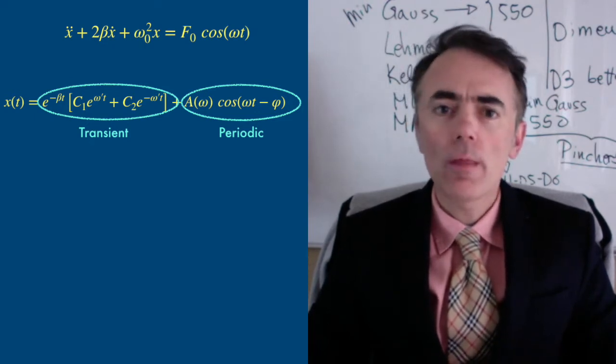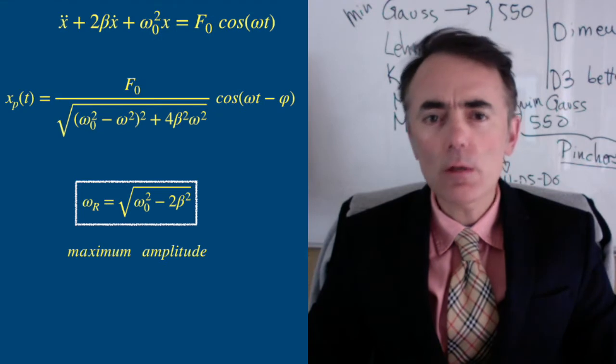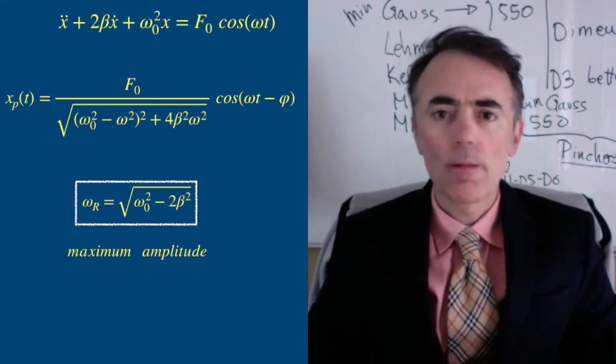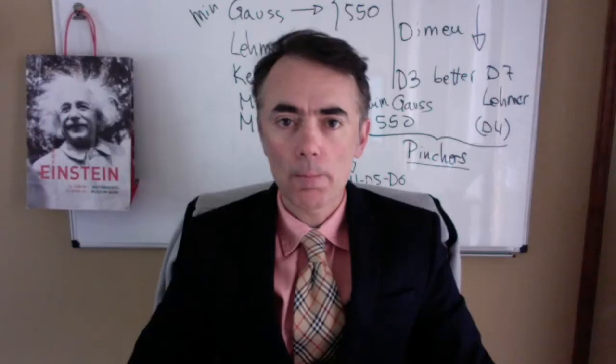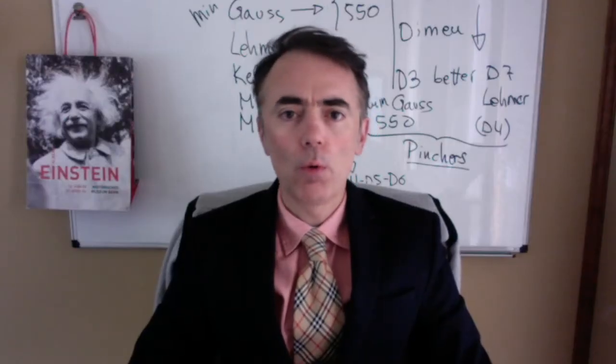We saw that there is a frequency for which the oscillator is at resonance. This means that the amplitude of the oscillations is maximum for that frequency. Let's explore this a bit more.